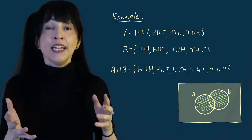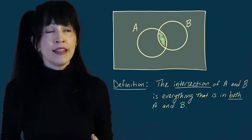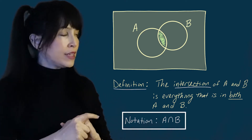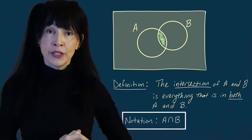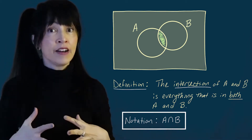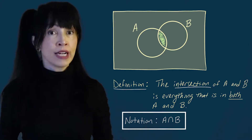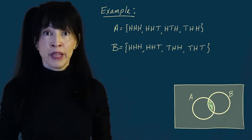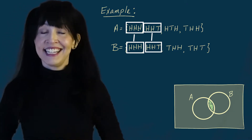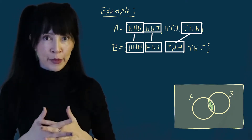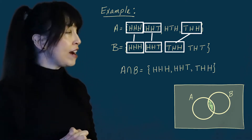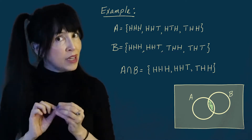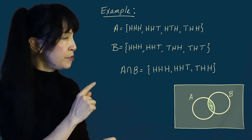The intersection of two events or two sets is everything that is common to both of them. We denote the intersection of sets A and B with an upside-down U — so A intersect B — and it consists of everything common to both sets. In our example, there are three elements in both A and B: heads-heads-heads, heads-heads-tails, and tails-heads-heads. In a Venn diagram, the intersection is visualized by shading only the overlapping region in the middle.